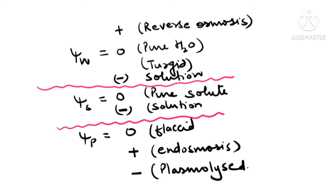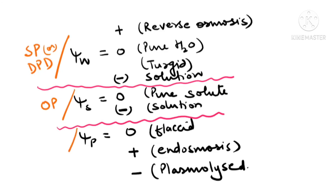This is the final summary for all the topics. Water potential is also known as suction pressure or DPD — diffusion pressure deficit. Solute potential is known as osmotic pressure and pressure potential is known as turgor pressure. I hope all the relations between potentials and pressures are clear to you. Thanks for watching.